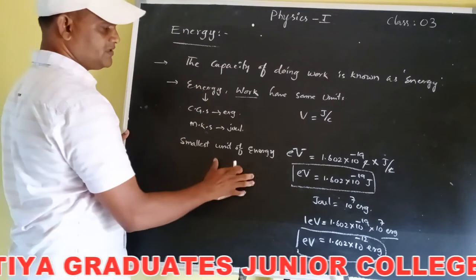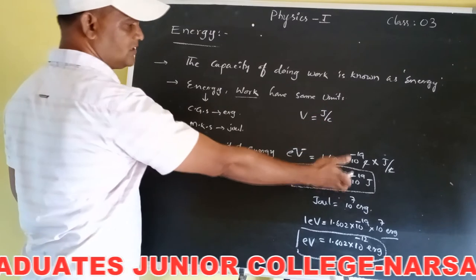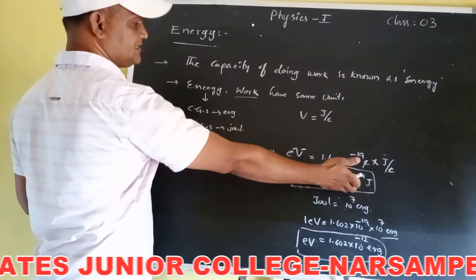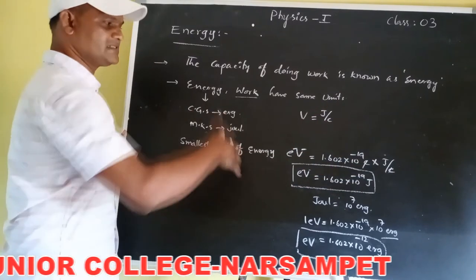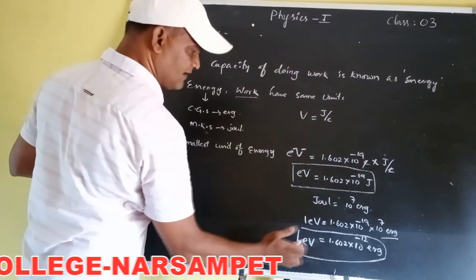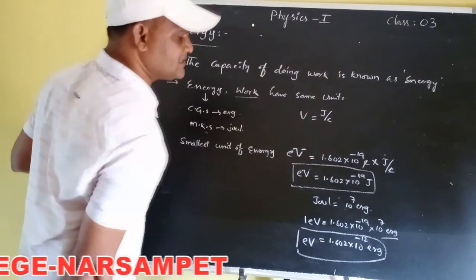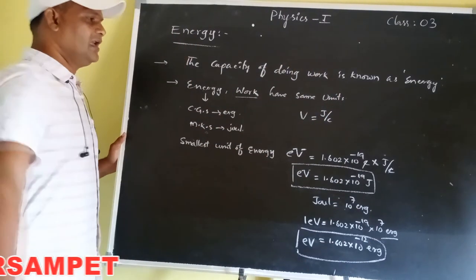The smallest unit of energy is electron volt. 1 electron volt equals 1.602 × 10⁻¹⁹ joule. When converted to CGS, that value equals 1.602 × 10⁻¹² erg.